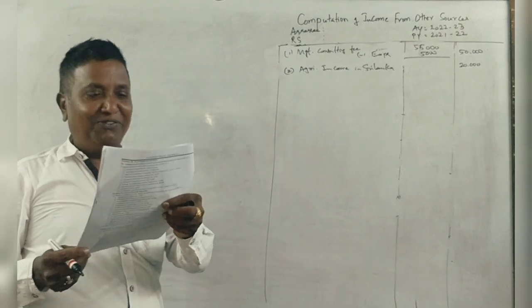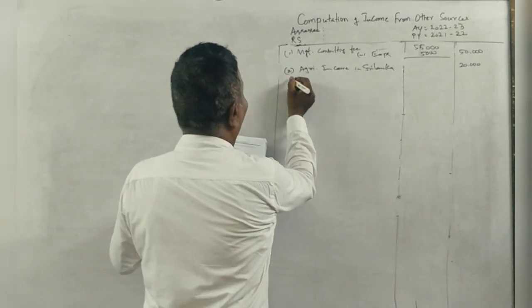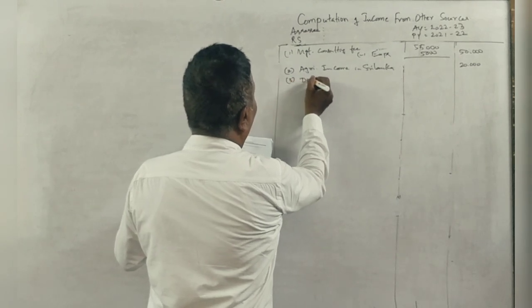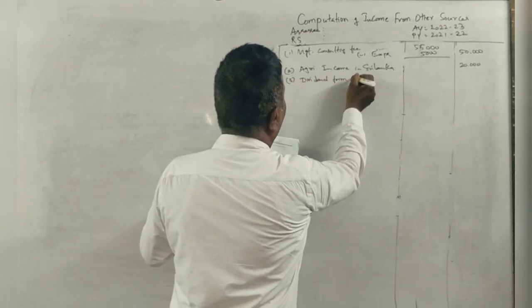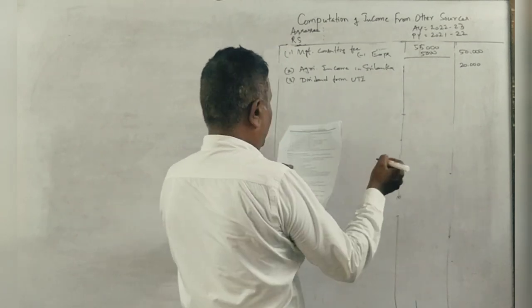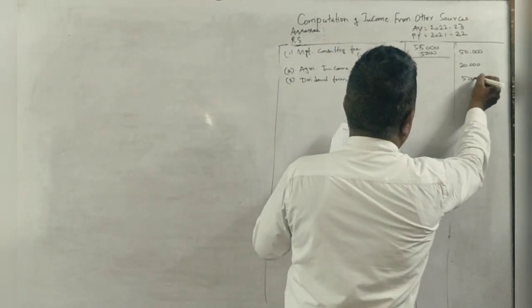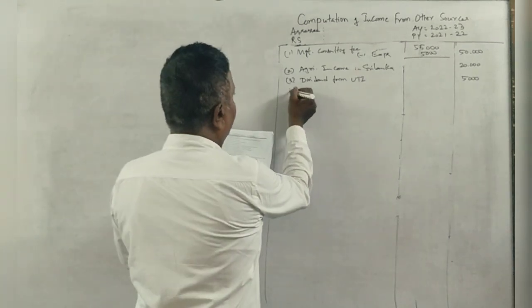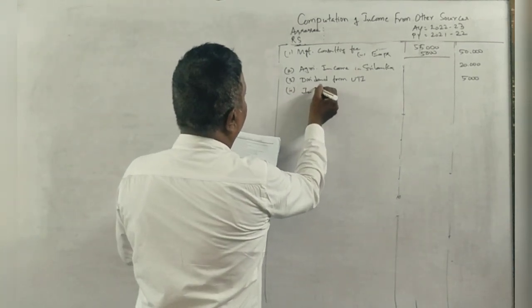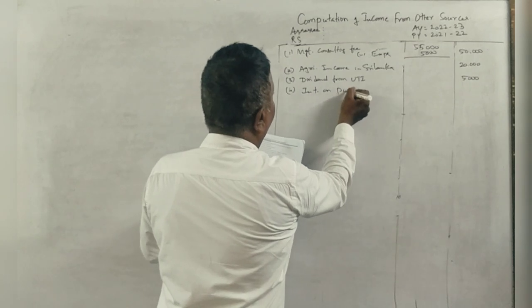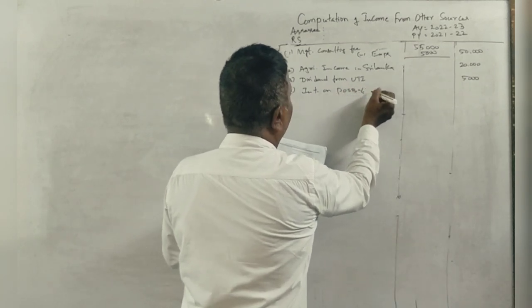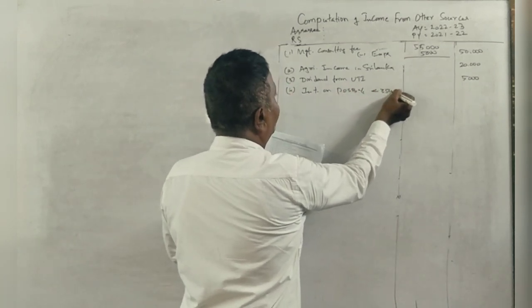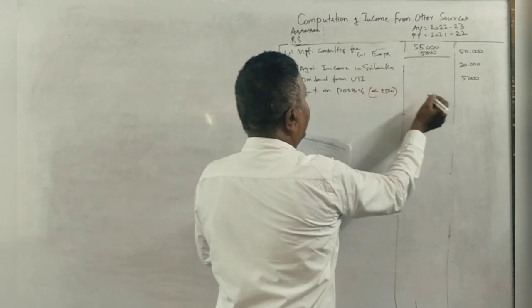Dividend from UTI, Rs. 5,000. Interest on POSB account. Interest on POSB account less than Rs. 3,500, exempted.